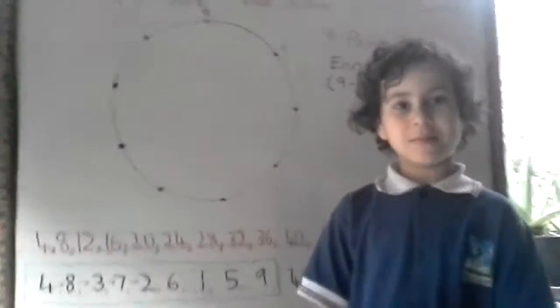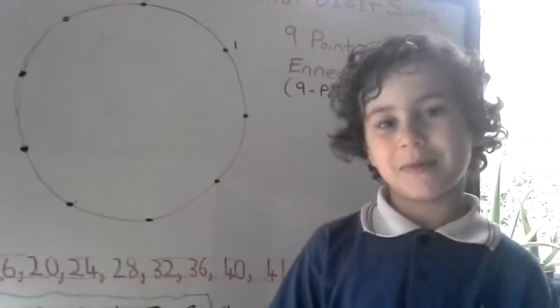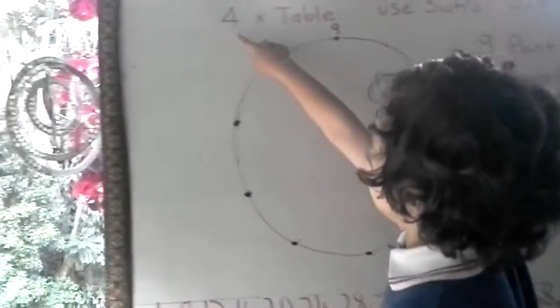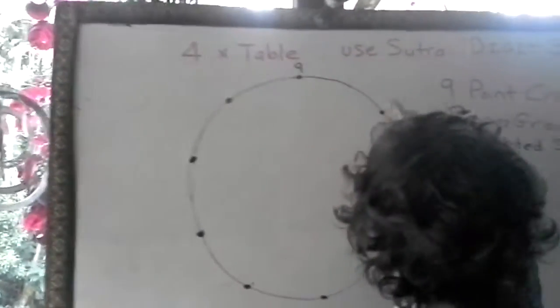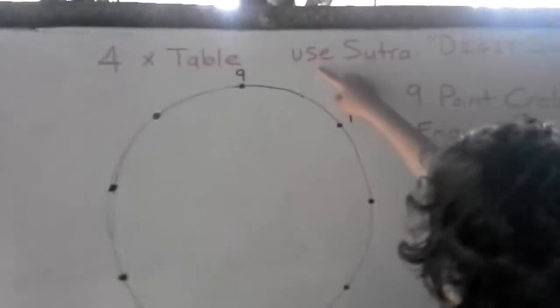Hey guys, I'm 7 and my name's Amir. We're going to be doing 4 times table. Then we're going to be doing sutra digit sums.